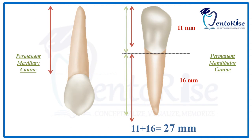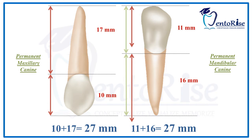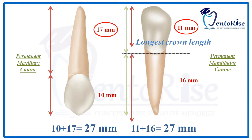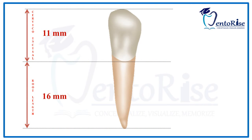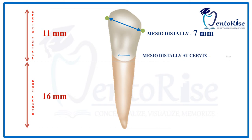The total length of a permanent maxillary canine is also 27 mm, meaning both the permanent maxillary canine and the mandibular canine are the longest teeth in the dental arch. However, the permanent mandibular canine has the longest crown length of 11 mm while the permanent maxillary canine has the longest root length of 17 mm. The mesodistal dimension as measured from the contact areas is 7 mm, while from the cervix it is 5.5 mm.